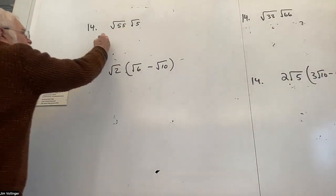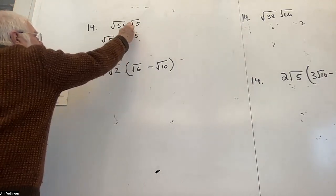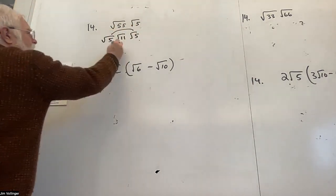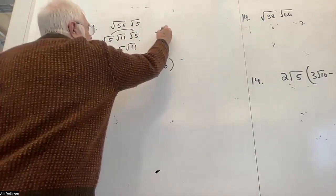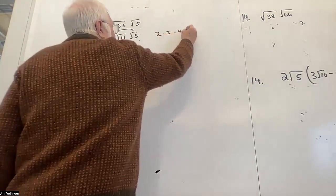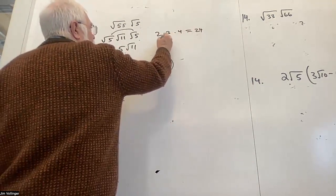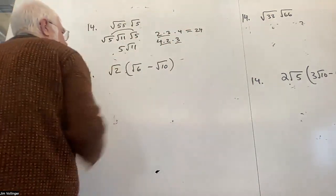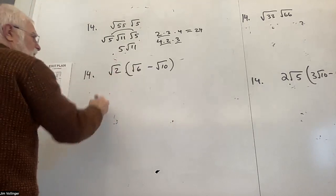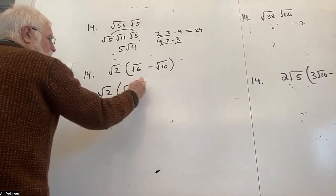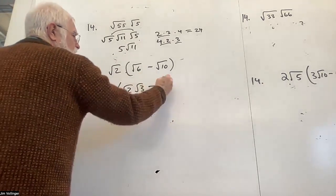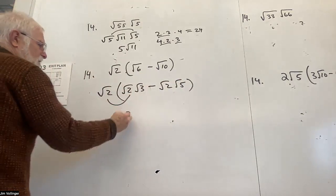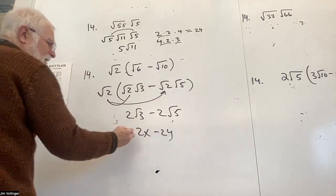Alright. Square root of 55 times the square root of 5. Square root of 5, square root of 11, square root of 5. And I can do the square root of 5 times the square root of 5 first. 5 root of 11. If you were going to do 2 times 3, which is 6 times 4, you should get 24. So you could have written that as 4 times 2 times 3. There's 8 times 3, 24. There's 6 times 4, 24. You can rearrange multiplication. So how would I do this one? I think I'd rename square root of 6, square root of 2, square root of 3. Rename square root of 10, square root of 2, square root of 5. And I can see square root of 2 times square root of 2 is 2 root of 3. And I can see square root of 2 times square root of 2 is minus 2 root of 5. And this is like saying 2x minus 2y. Can't do anything with it. That's your answer.